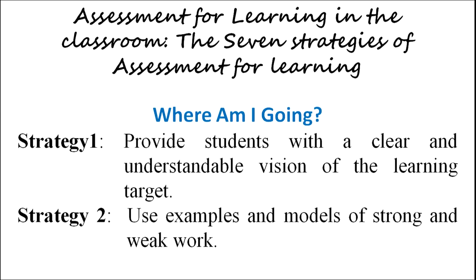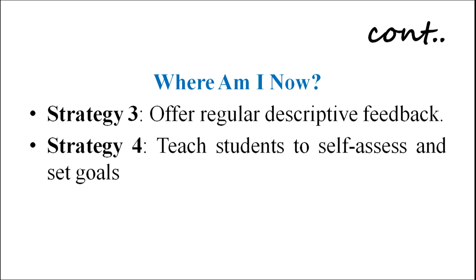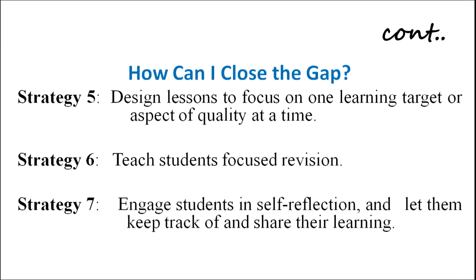Assessment for learning in the classroom — the seven strategies: First, 'Where am I going?' — provide students with a clear and understandable vision of the learning target. Second, use examples and models of strong and weak work. Third strategy, 'Where am I now?' — offer regular descriptive feedback and teach students to self-assess and set goals. The next category, 'How can I close the gap?' — design lessons to focus on one learning target at a time, teach students focused revision, engage students in self-reflection, and let them keep track of and share their learning.